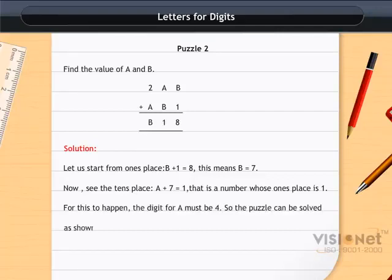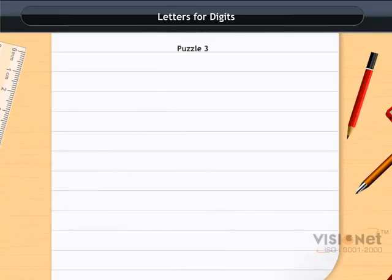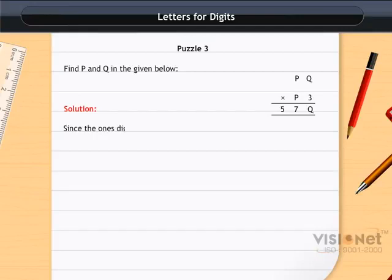Look at puzzle 3 and find P and Q. Since the ones digit is Q×3=Q, so Q can be equal to 0 or 5. Let P=1.